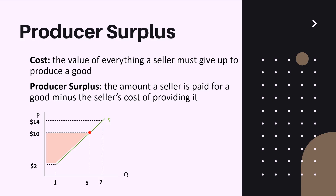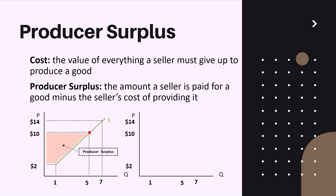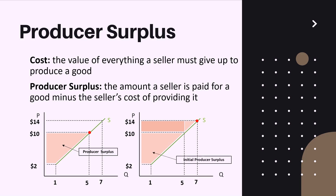Let's say the equilibrium price is now fourteen dollars instead of ten dollars. As with consumer surplus, we now have three different parts of producer surplus: the first part is the initial producer surplus; the second part is the additional producer surplus to initial producers, representing the greater benefit from the higher price for producers who were already producing at ten dollars; and the third part is the producer surplus to new producers entering at the higher price.